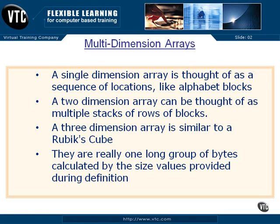If you think about it, a single-dimension array is similar to a series of alphabet blocks set along in a row. They can be integers with numbers on them, letters or a character array where each block has a single character on it with a null at the end if it's going to be a string. They could be floats, doubles, or any other native type — there's just one string of them, and we sequence through the array name with brackets, zero through whatever the length happens to be. A two-dimension array is like a spreadsheet, or can be thought of as a stack of rows of blocks.